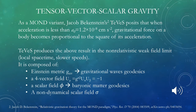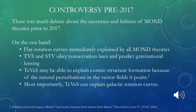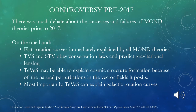There was already some controversy about TeVeS prior to the 2017 testing situation. Proponents touted their experimental and empirical successes: TeVeS immediately explains flat rotation curves of celestial bodies, obeys conservation laws, predicts gravitational lensing, and is purported to explain cosmic structure formation through natural perturbations in the vector field. Most importantly, TeVeS can explain galactic rotation curves, which is a major area where explanations are needed.